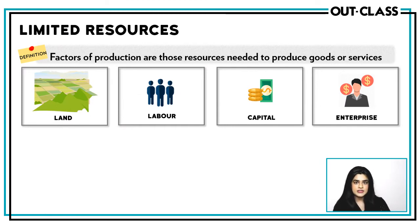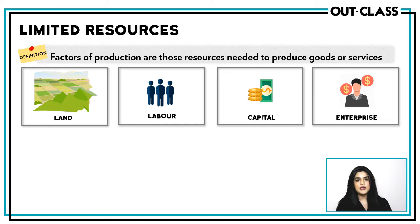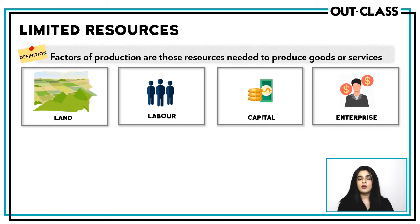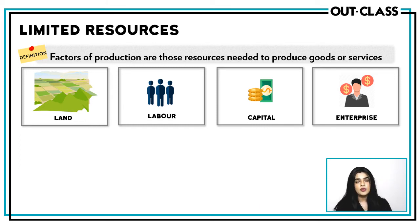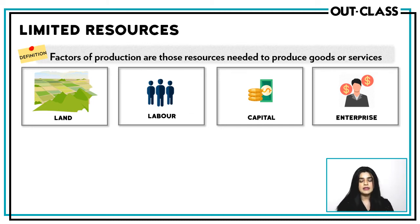Limited resources are materials that you need to make goods and services. These limited resources are also called factors of production. Factors of production are classified into four main categories: land, labor, capital, and enterprise. We will get into that detail later on in the slides.